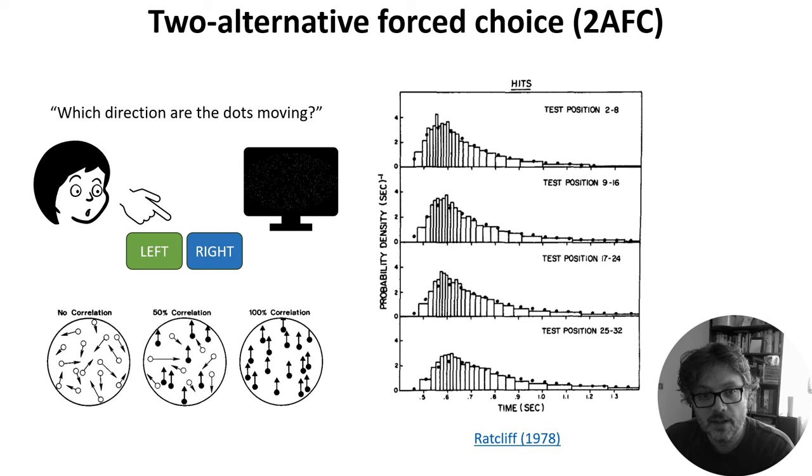The reaction time is the time between the start of the video and the moment when they press the button. If you run this experiment, you see characteristically skewed distributions of reaction times. This data is actually from a slightly different task where participants were asked whether or not they had seen the image being shown before.